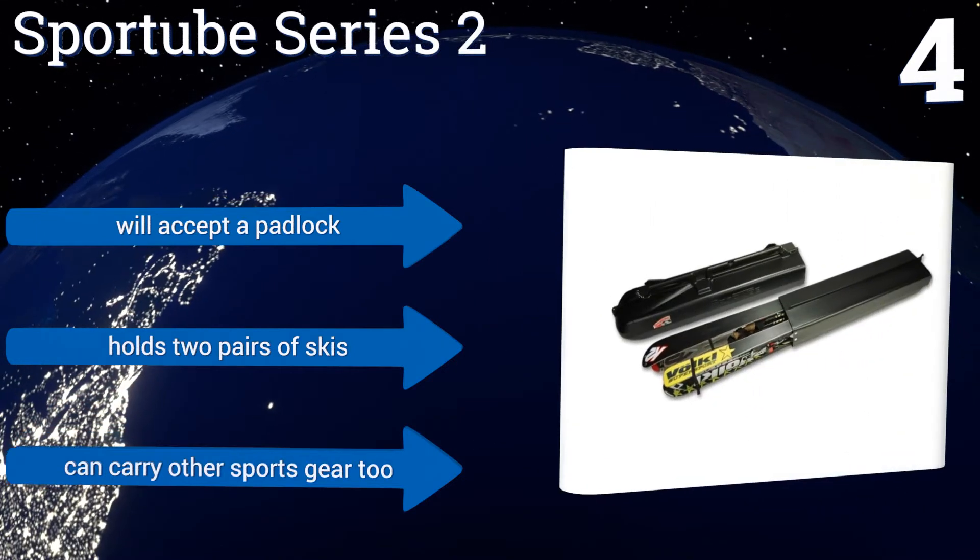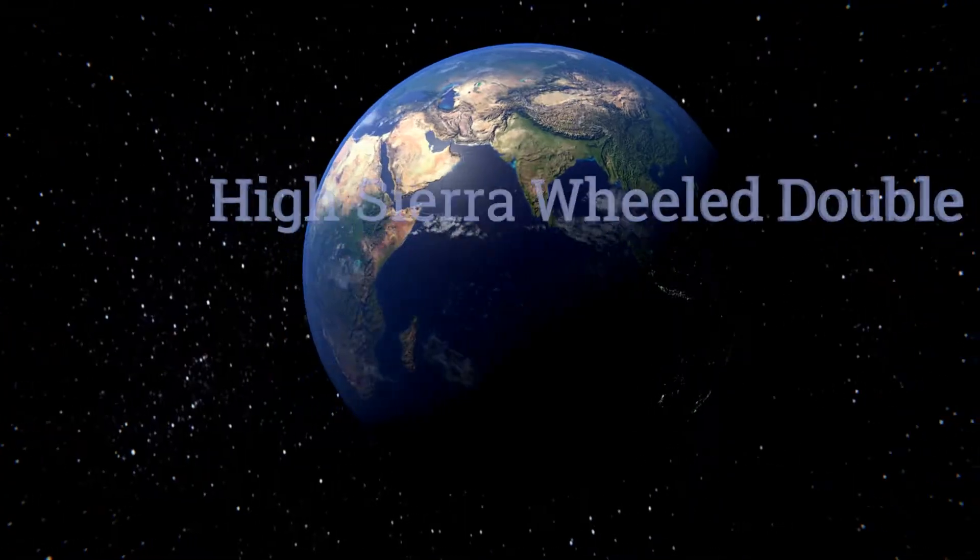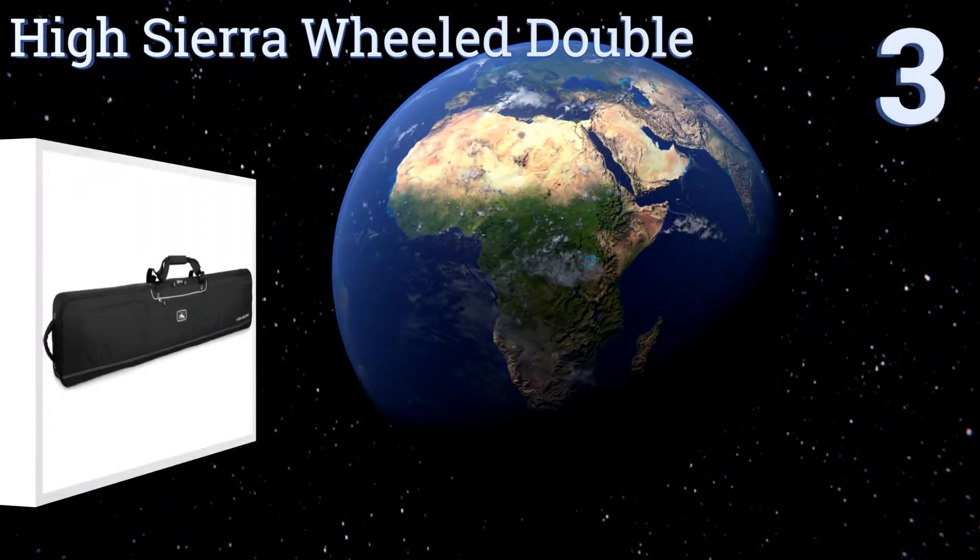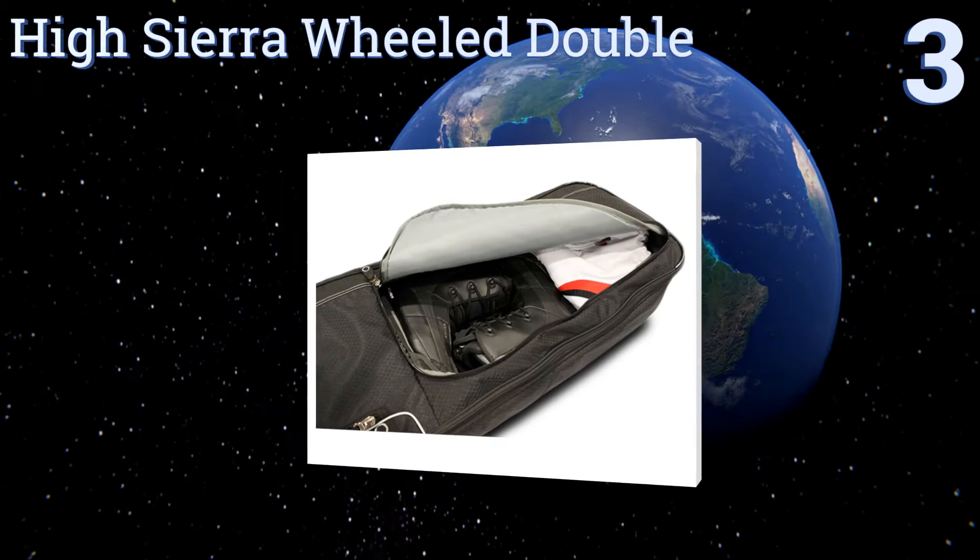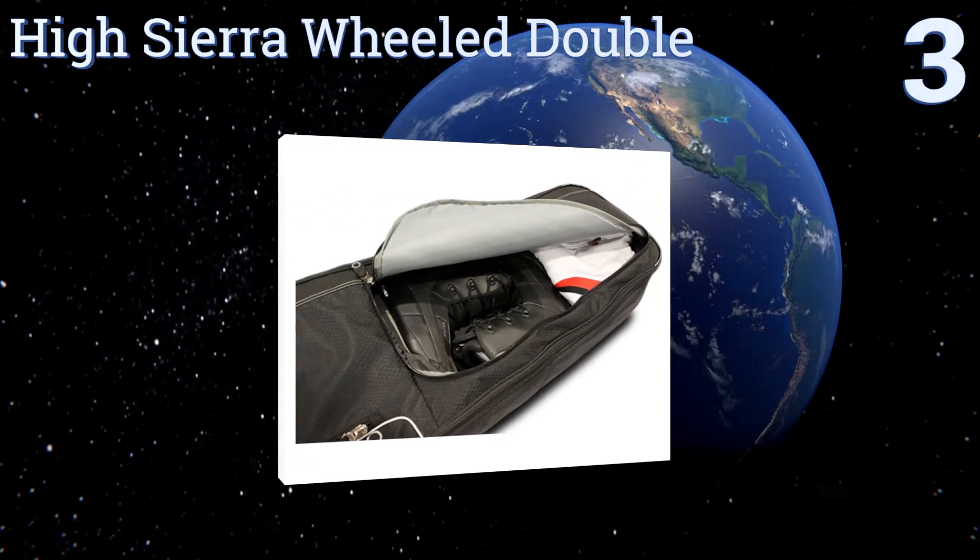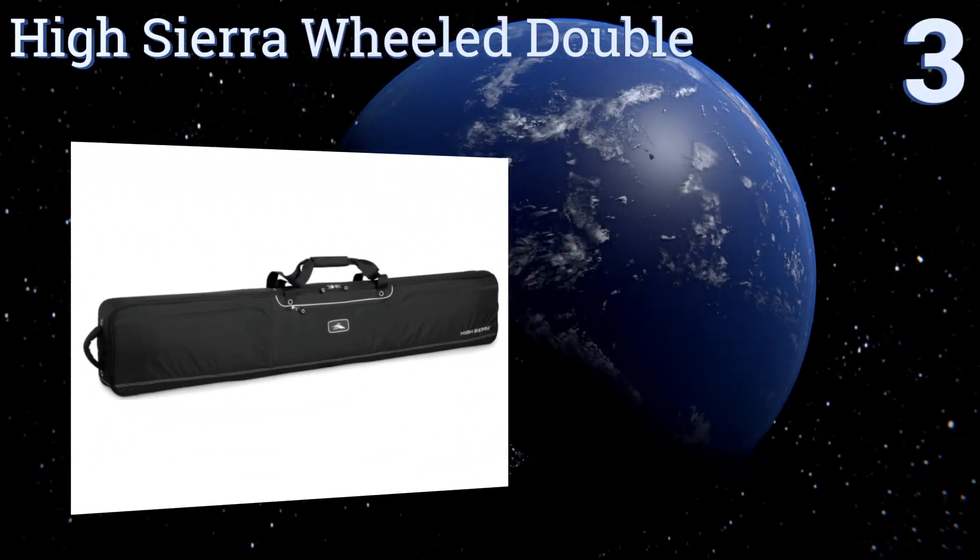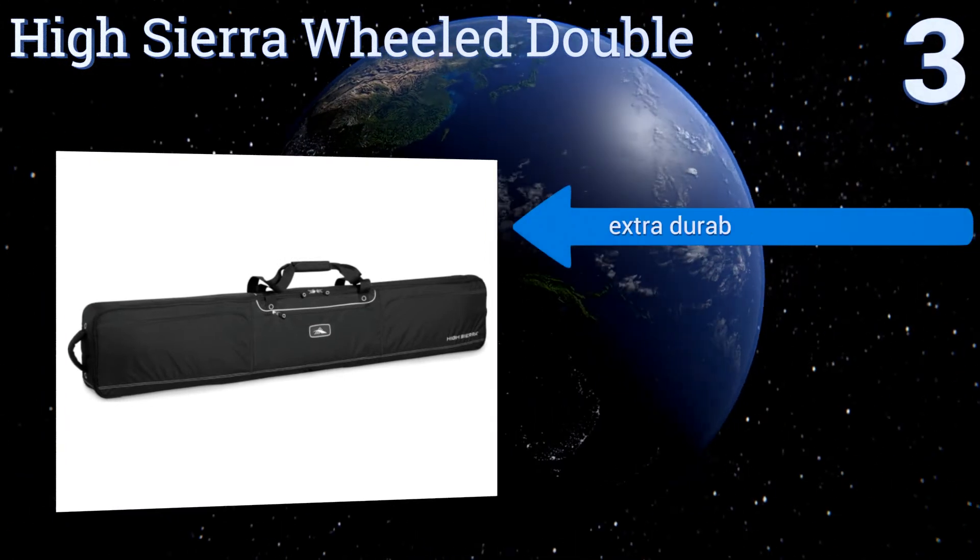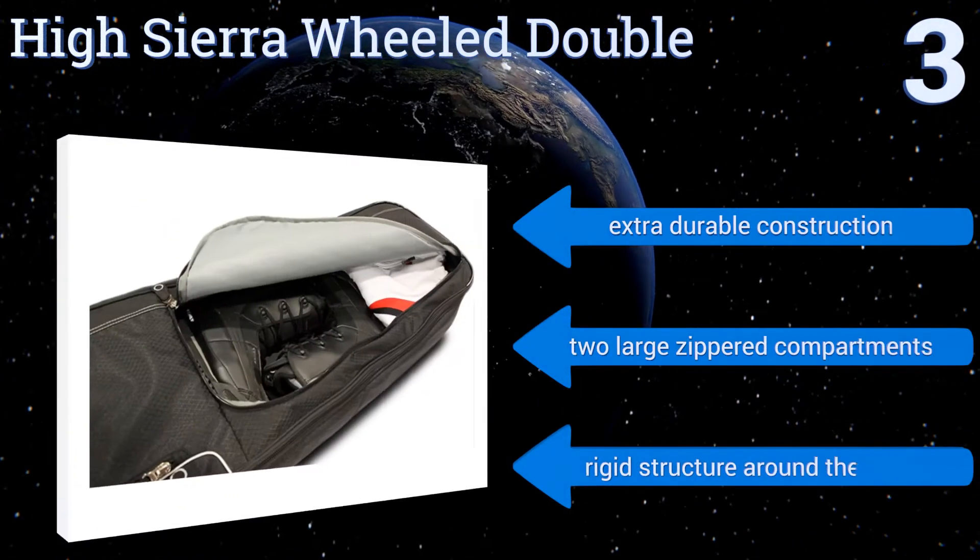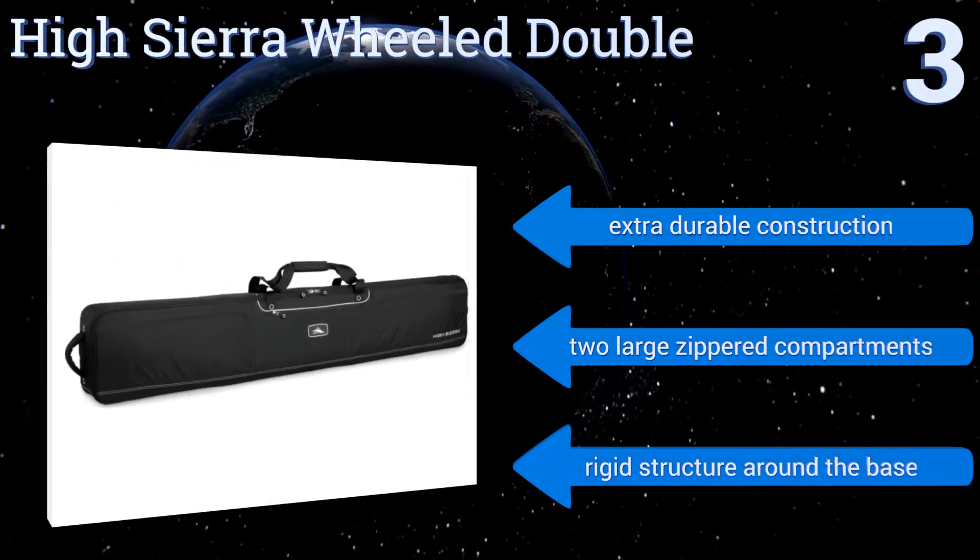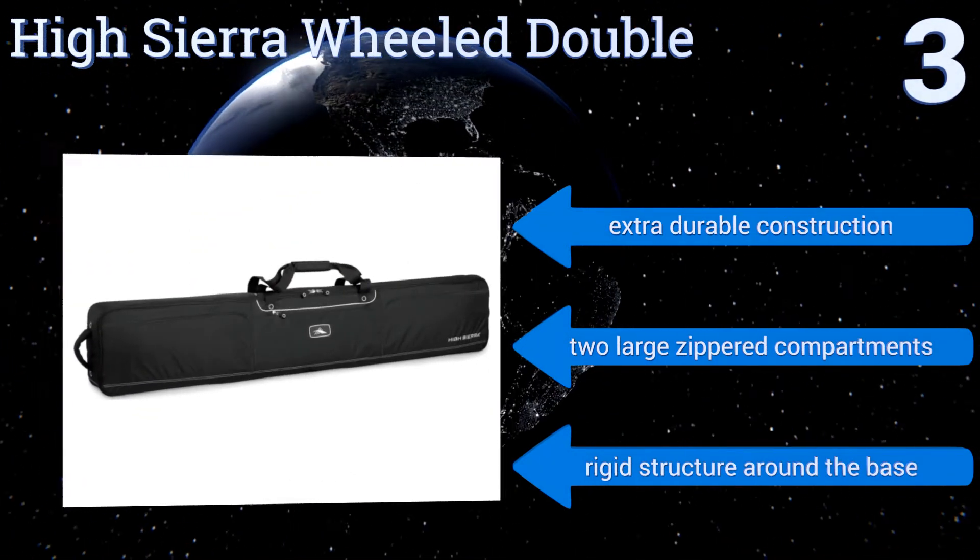Nearing the top of our list at number three, perfect for group trips, the High Sierra Wheel Double is large enough to accommodate two pairs of skis and a snowboard at the same time. Don't worry about having to haul it around though - integrated inline skate wheels make it easy to transport even when fully loaded. It's an extra durable construction with two large separate compartments and a rigid structure around the base.